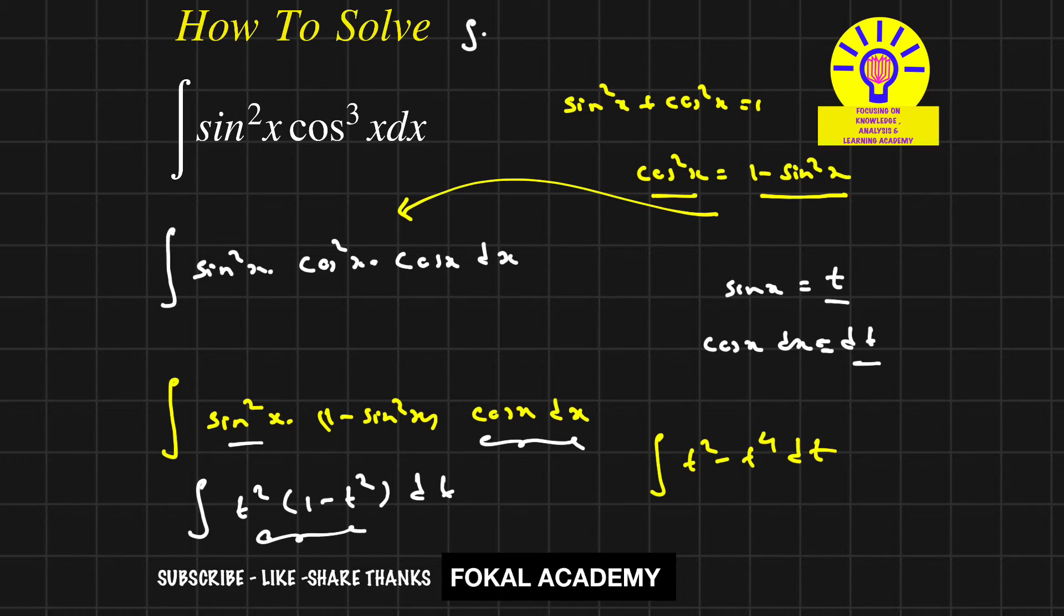We know that integral of x^n dx equals x^(n+1) divided by (n+1) plus some constant value. Now apply this formula here. Then it becomes t³/3 minus t⁵/5 plus some constant.